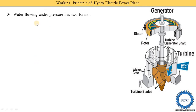We know that water flowing under pressure has two forms of energy. One is kinetic energy and one is potential energy. Kinetic energy is due to the velocity of water, and potential energy is due to the height of the water.